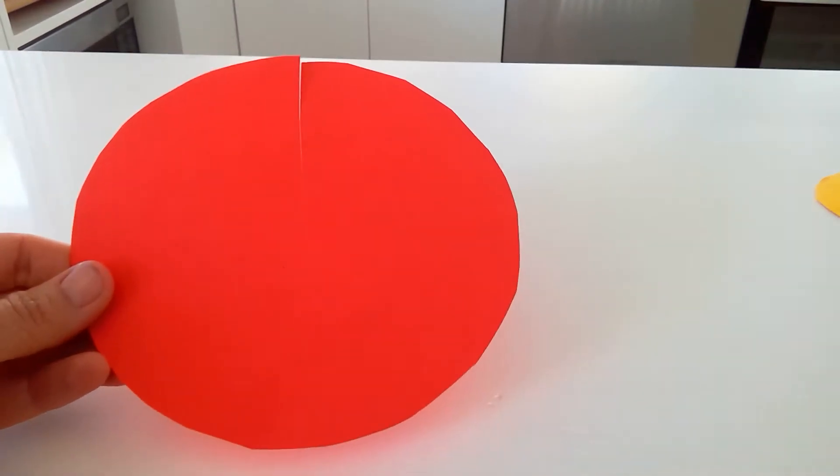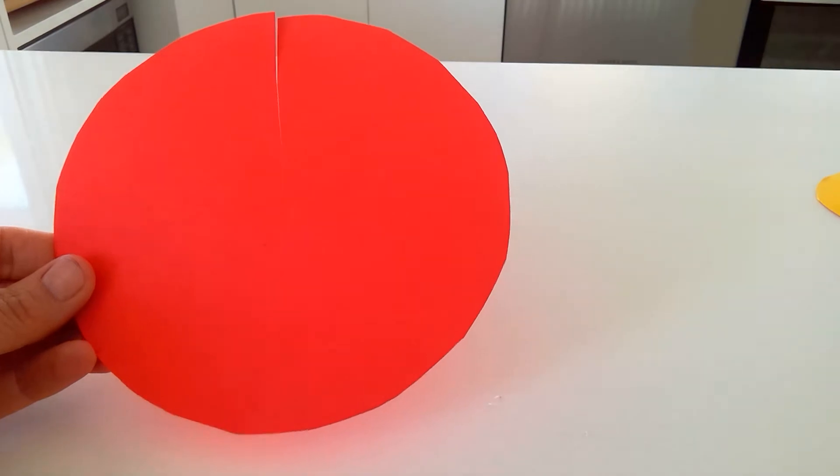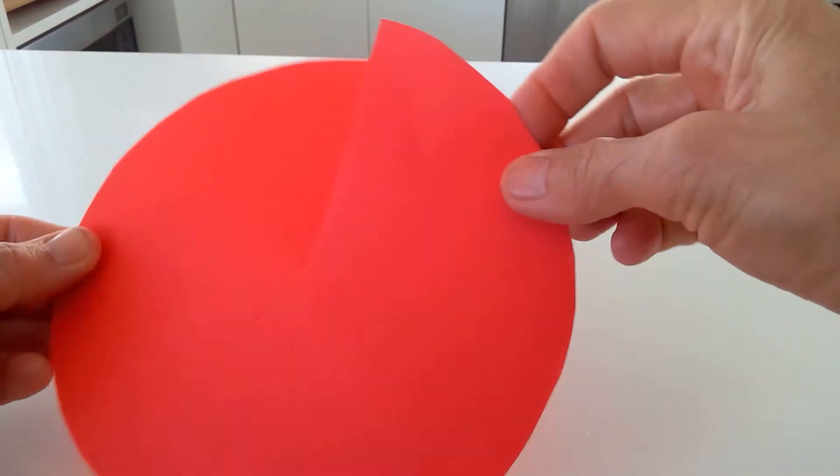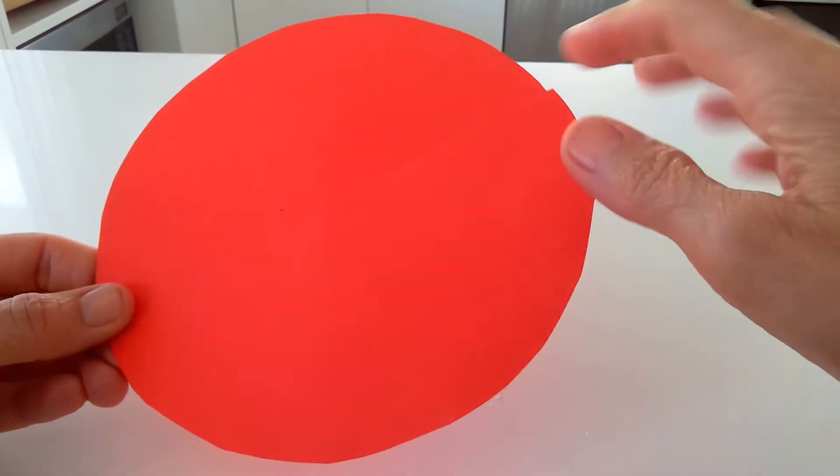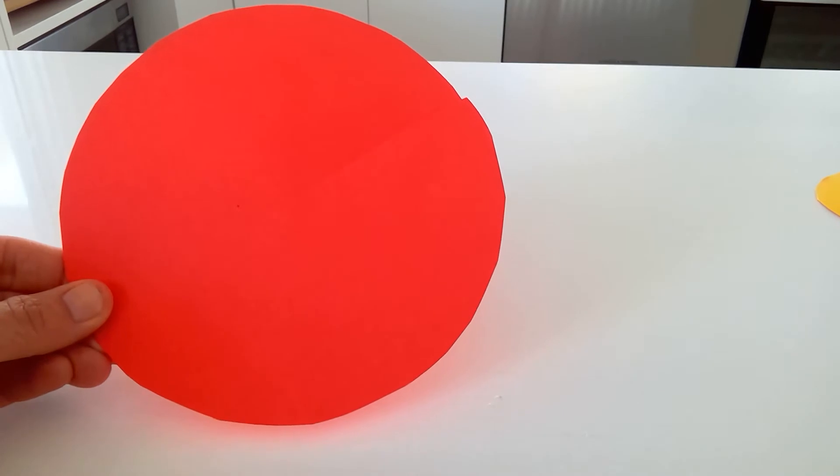So first I got started by tracing a saucer onto a sheet of red cardboard, drew a line to the centre of the circle after I cut it out and cut it across the line. So I've got a red circle here which will form the bear's face.